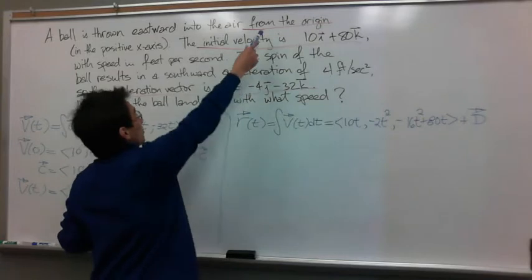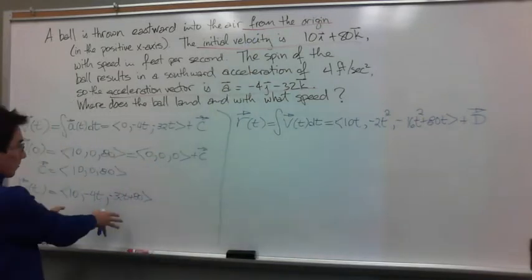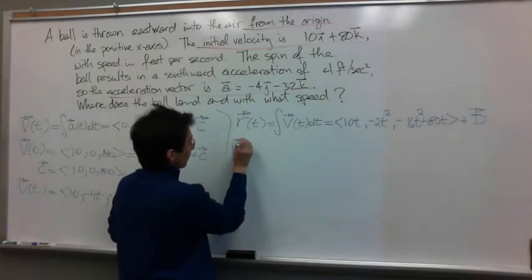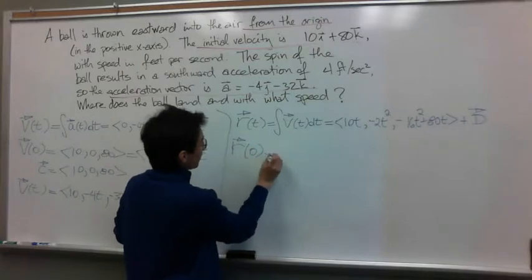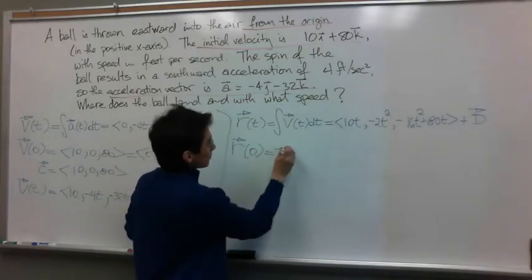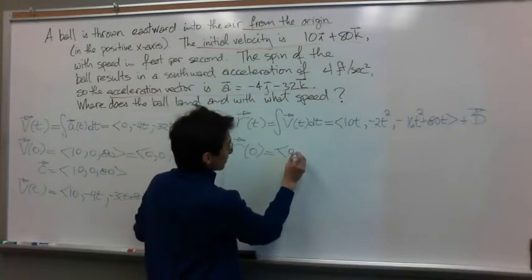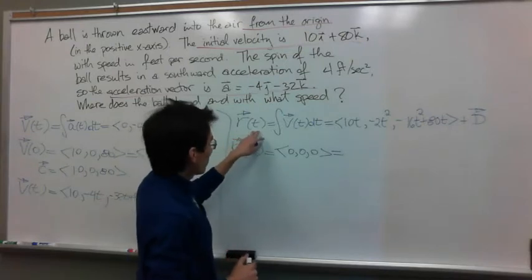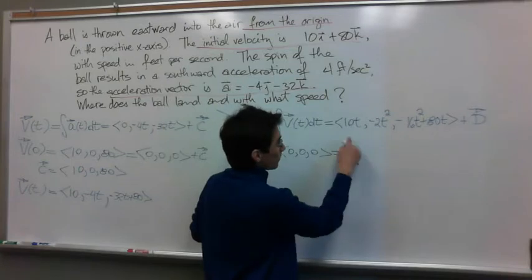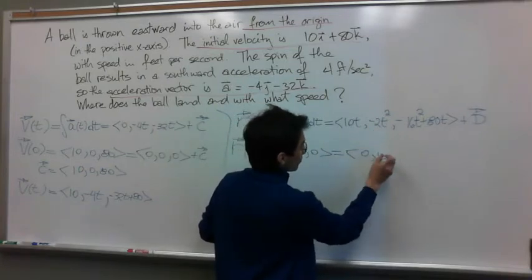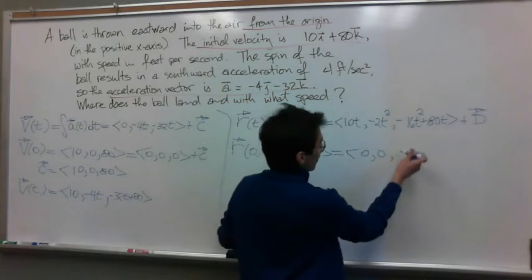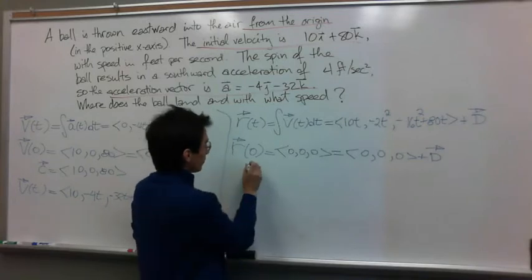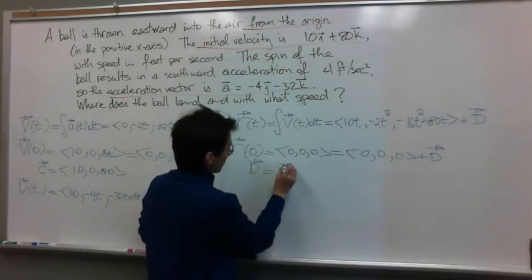Now we can use the initial condition to get rid of constant B. So my position vector function evaluated at t equals 0 is equal to the position of the ball, which was from the origin. Evaluating at t equals 0 gives 0 for each component plus my constant B. As you can see, my constant B will be equal to the zero vector.